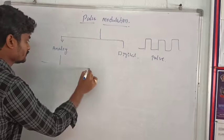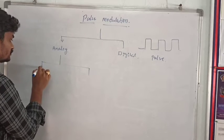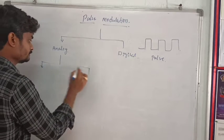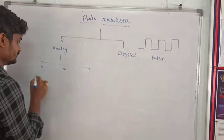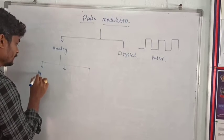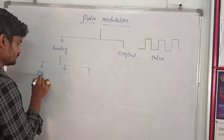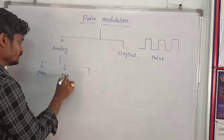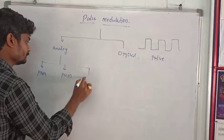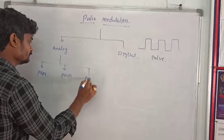Analog pulse modulation has three types: PAM (Pulse Amplitude Modulation), PWM (Pulse Width Modulation), and PPM (Pulse Position Modulation).